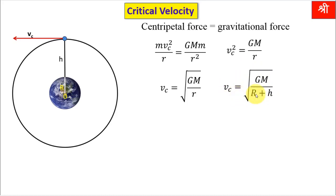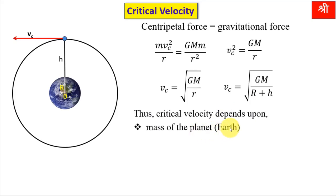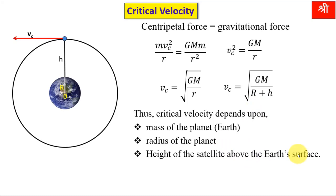This is the expression for critical velocity of a satellite: Vc = √(GM/(R+H)). Critical velocity depends on: (1) mass of the planet, capital M, which is 6×10²⁴ kg for Earth; (2) radius of the planet, capital R; and (3) height of the satellite above the Earth's surface, H. G is the universal gravitational constant, 6.67×10⁻¹¹ in SI units, and is the same for all planets. So long as the satellite is revolving around the Earth, M, G, and R remain constant; only H can change.